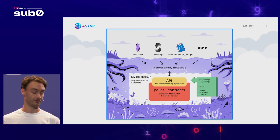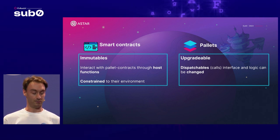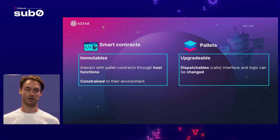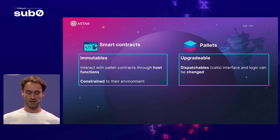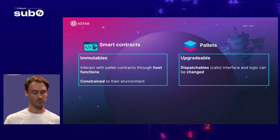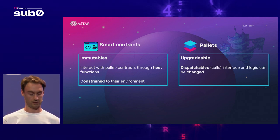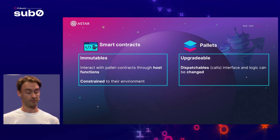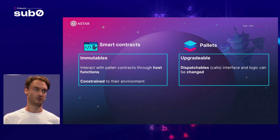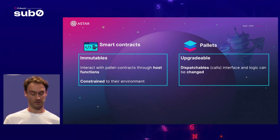To summarize: smart contracts are immutable, and once deployed on-chain they can only interact with the runtime using pallet contract host functions. They are constrained in their environment — they can call each other or use the pallet contracts API — but to extend their capabilities they need to call other pallets. You might be thinking about upgradable contracts, but contracts are immutable by default. If there is one contract that is immutable and deployed on-chain, we should consider all contracts immutable because we need to ensure compatibility.